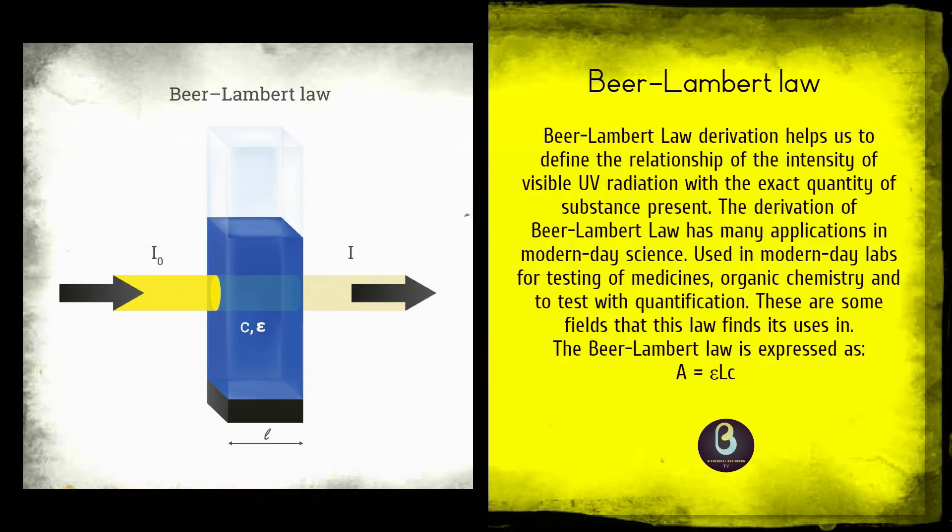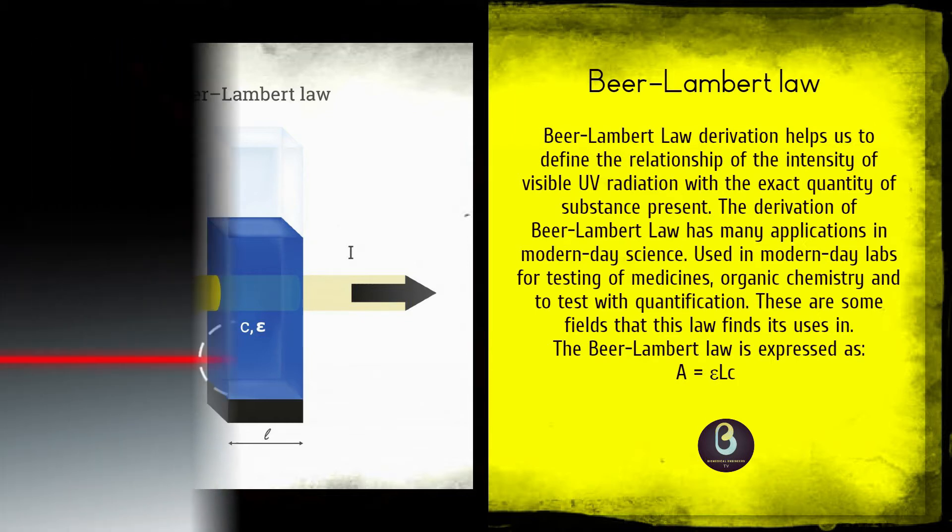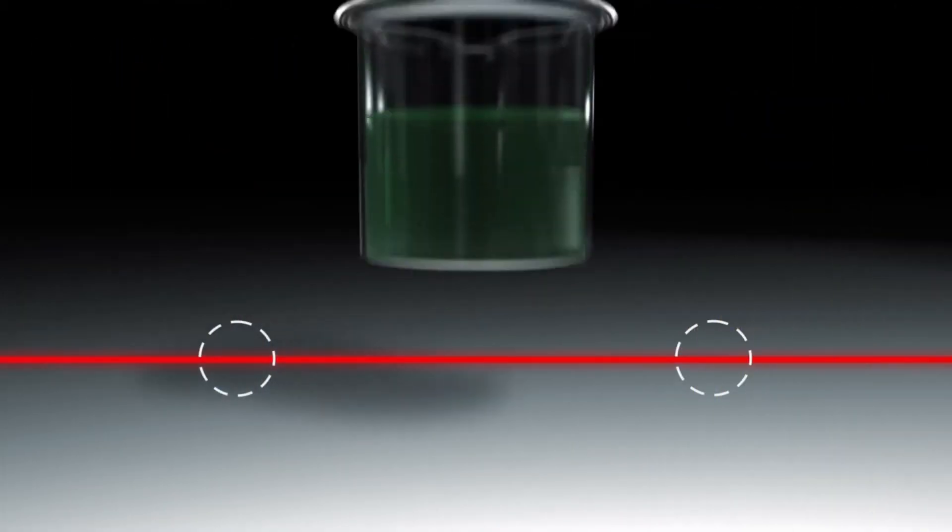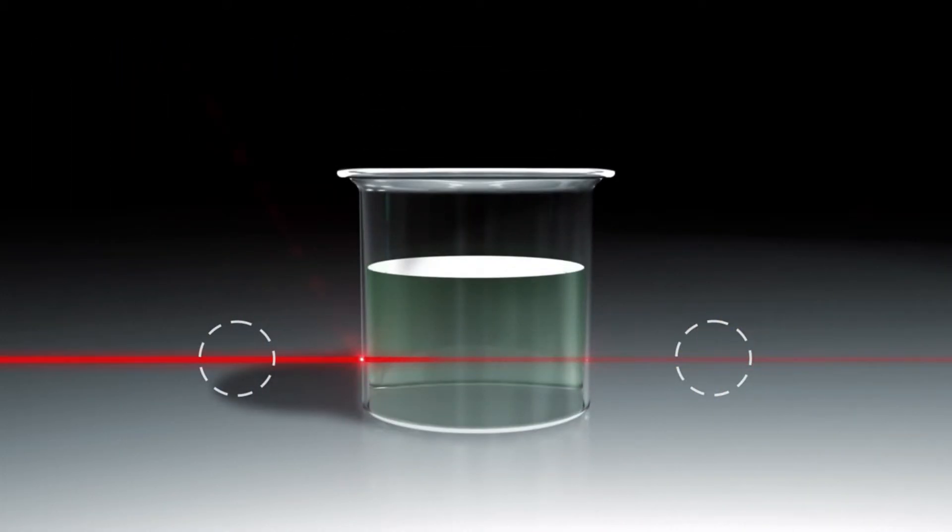The modern derivation of the Beer-Lambert law combines the two laws and correlates the absorbance, the negative decadic logarithm of the transmittance to both the concentrations of the attenuating species and the thickness of the material sample.